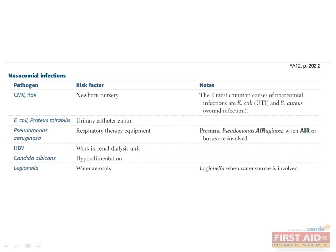Here is a list of infections most likely to be acquired in the hospital. CMV and RSV are very common in newborn nurseries. E. coli and Proteus can both be acquired through urinary catheterization. Pseudomonas can be acquired through respiratory therapy equipment. Hepatitis B virus can be transmitted via renal dialysis. Candida can be transmitted by hyperalimentation, and Legionella can be transmitted by water aerosols such as those found in ventilation systems. E. coli and Staph aureus are the two most common causes of nosocomial infections. If you ever see a burn victim, think about Pseudomonas, and when a water source is involved, think about Legionella.